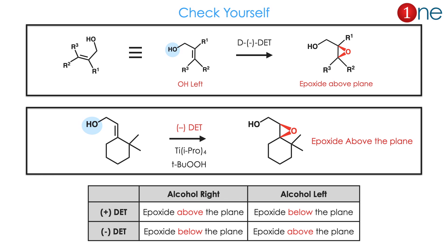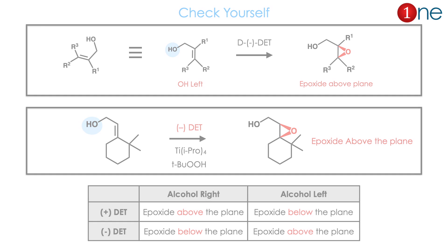If you look at the second example, the double bond is already vertical while the alcohol is on the left side. You are using minus DET, so it forms above the plane. So, the OH position and DET decide the enantioselectivity.